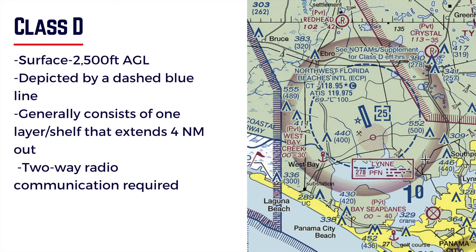You can identify a Class D airport by the blue dashed line and that one layer. Class D also requires two-way radio communication. A transponder is not required, but a manned pilot is required to talk to air traffic control before entering or departing Class D airspace.